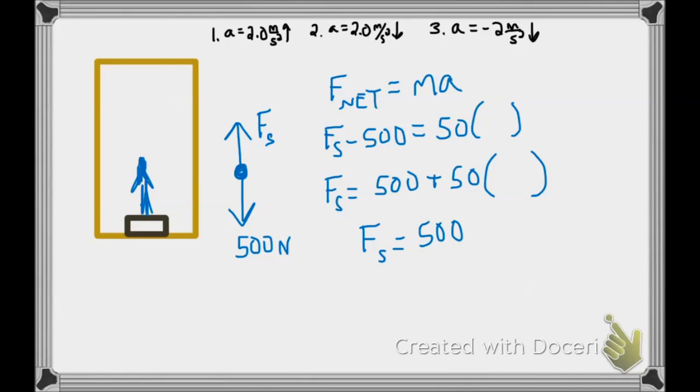Case 2, the student is going down with an acceleration of 2 meters per second squared. That's against our frame, we put it in as a negative 2. And look what happens, the force of the scale is only going to read 400. So the 500 pushing down is more than the 400 pushing up.